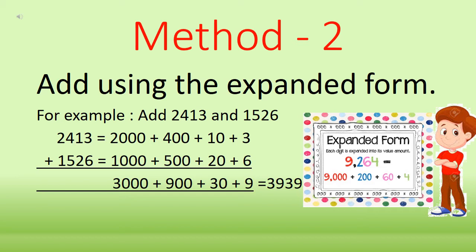The expanded form of 2,413 is 2,000 plus 400 plus 10 plus 3. The expanded form of 1,526 is 1,000 plus 500 plus 20 plus 6. Now we will add them: 3 and 6 equals 9. Then 10 plus 20 equals 30. Then 400 plus 500 is 900. And finally, 2,000 plus 1,000 equals 3,000. So we get 3,000 plus 900 plus 30 plus 9, which equals 3,939. This is the method of addition using the expanded form.